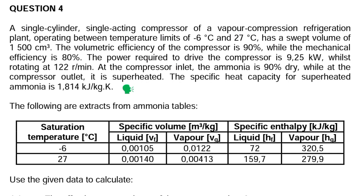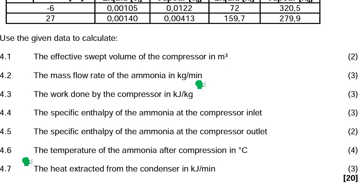The following values are extracted from ammonia tables. Using the given data, calculate: 4.1 the effective swept volume of the compressor in cubic meters; 4.2 the mass flow rate of the ammonia in kg per minute; 4.3 the work done by the compressor in kilojoules per kg; 4.4 the specific enthalpy of the ammonia at the compressor inlet; 4.5 the specific enthalpy of the ammonia at the compressor outlet; 4.6 the temperature of the ammonia after compression in degrees Celsius; and 4.7 the heat extracted from the condenser in kilojoules per minute.